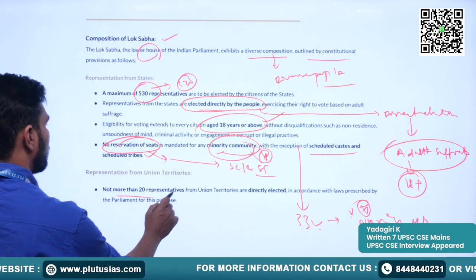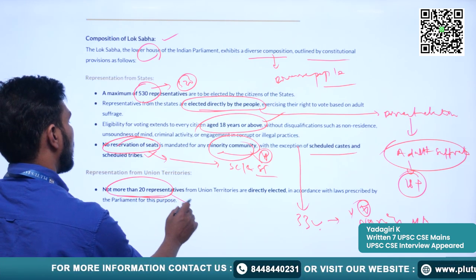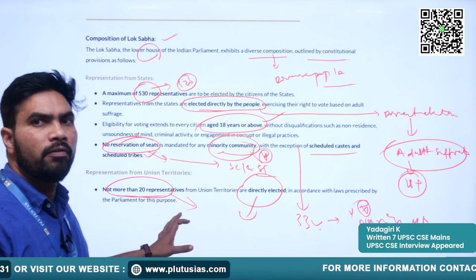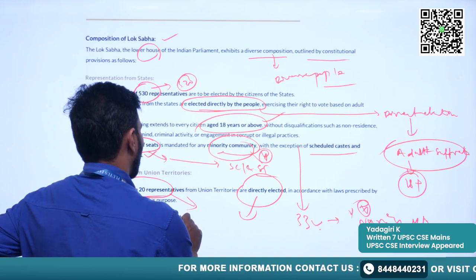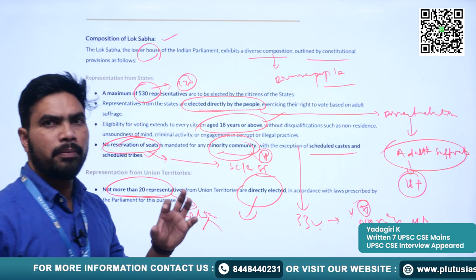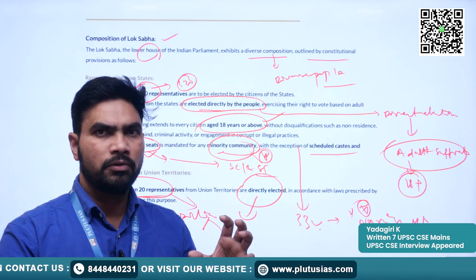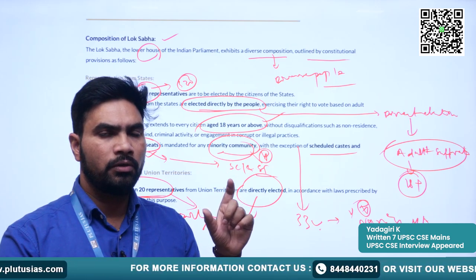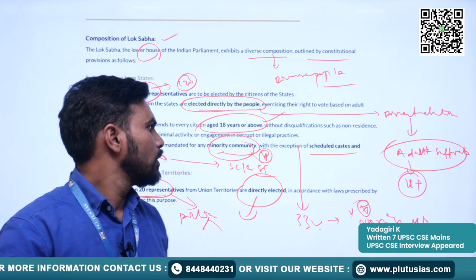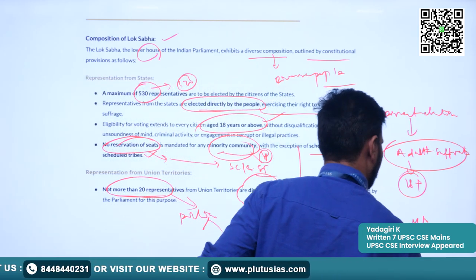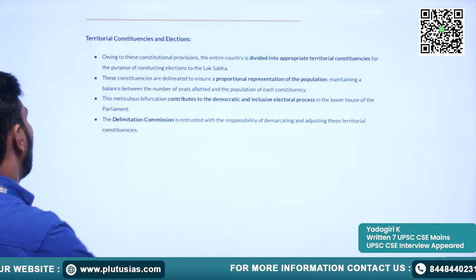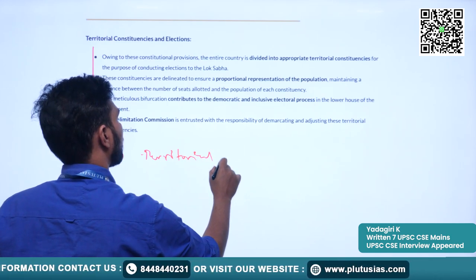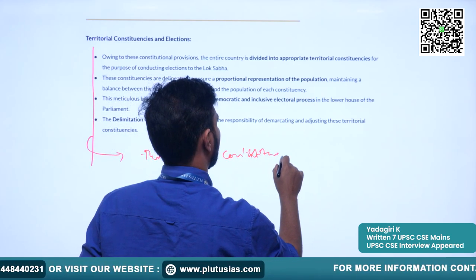When it comes to representation for union territories in Lok Sabha, not more than 20 representatives from union territories shall be directly elected in accordance with laws prescribed by Parliament. Parliament can make a law describing how many representatives can come from a particular union territory — overall not more than 20 representatives should represent union territories. For electing a representative, we have a system of territorial constituencies.